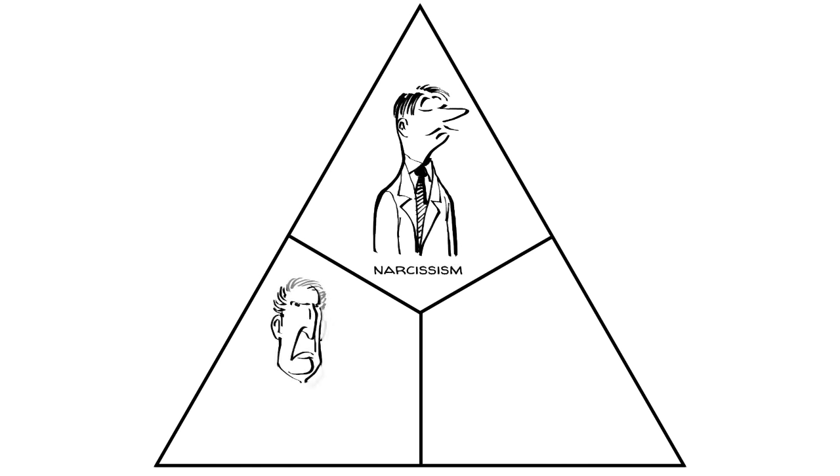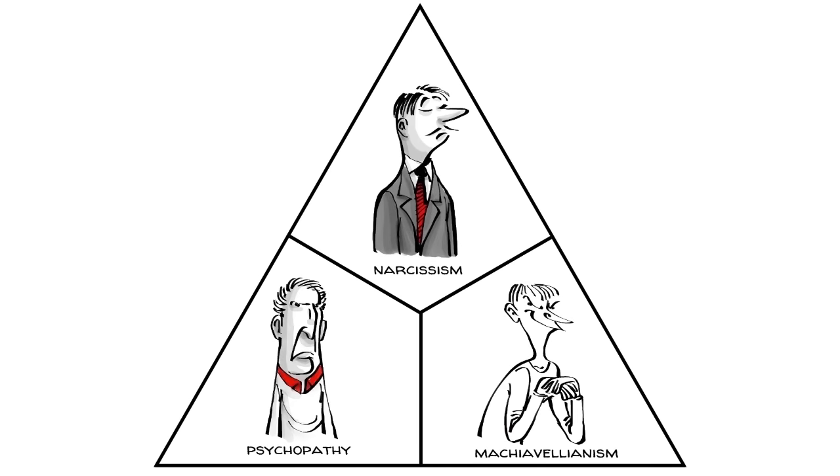In psychology, the dark triad represents three personality traits: narcissism, psychopathy and Machiavellianism.